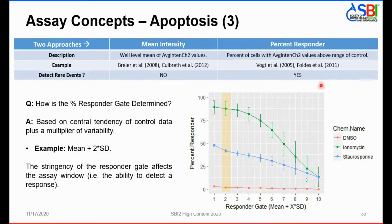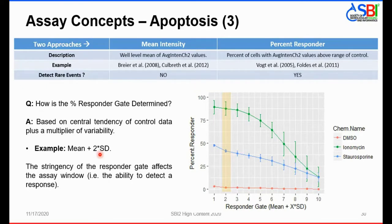To use the percent responder approach, you must determine a responder gate based on the central tendency of the control data plus a multiplier of signal variability. For example, any cell with caspase fluorescent intensity greater than or equal to the mean plus or minus two standard deviations of controls would be scored as a responder. You can see how various multipliers of the control standard deviation affect the percent responder outputs for DMSO, ionomycin, and staurosporine treatments — this is another optimization step to set your responder gating for this particular HCS assay.